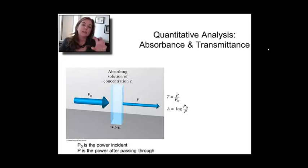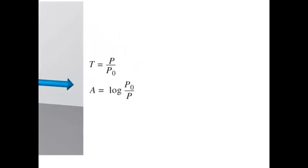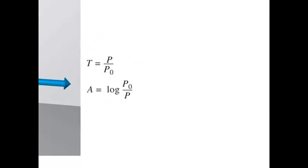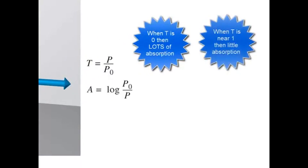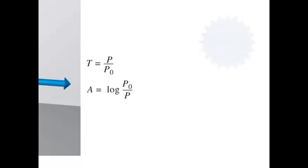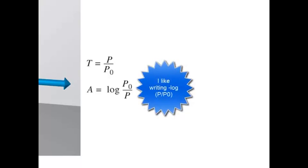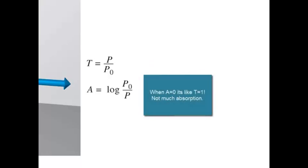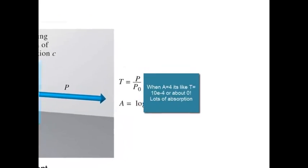Transmittance is the amount coming out divided by P0. If you have a transmittance of 100%, your sample didn't absorb anything. If you have a transmittance of only 10%, your sample absorbed 90% of the light. Transmittance can be in percent or a fraction. For absorption, it's a little bit different. It's log P0 over P. I always write it as minus log P over P0. It's the log of the transmittance.